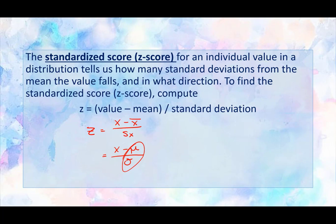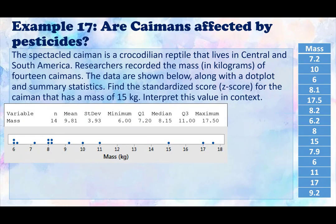Okay. So something super important here: if this is positive, it will be above the mean. And if it's negative, it will be below the mean. And again, something super important to remember is that the standardized score or the z-score is how many standard deviations something is above or below that mean. So let's go to another example here. Example number 17: are caimans affected by pesticides?